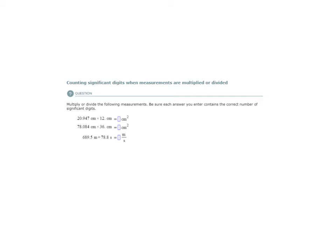So let's look at A first. We are taking 20.947 centimeters, we're multiplying it by 12 centimeters. What will our answer be? Well, let's ask ourselves, how many significant digits do we have in each measurement?